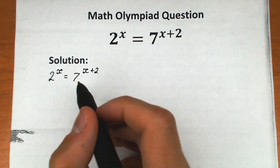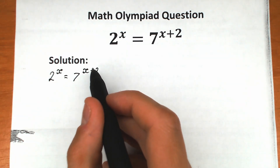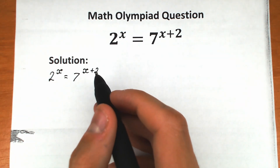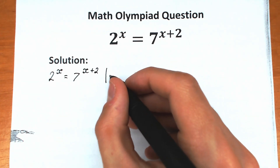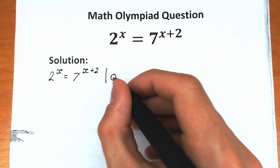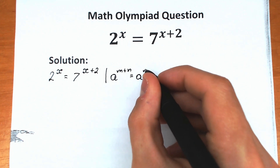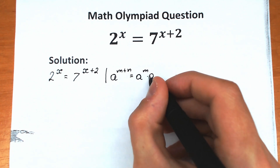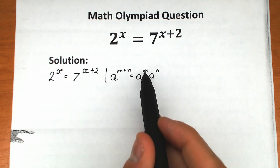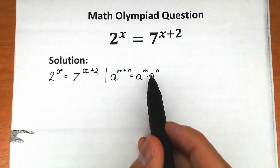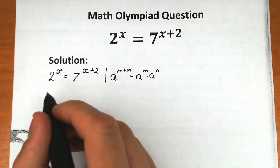If you look closely at the right-hand side, we have 7 to the power x plus 2 — this is addition in our exponent. If you know a little bit about power rules, the most important rule here is: a to the power m plus n can be written as a to the power m times a to the power n. We can write it as a product. Let's do the same thing on the right-hand side.